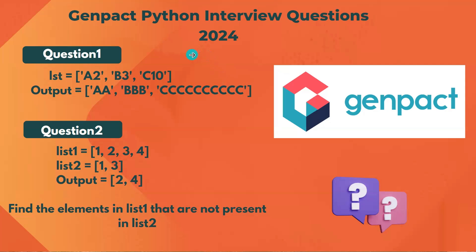Hello everyone, welcome back to the channel. In this video I will be covering Python interview questions that were recently asked in a GenPact interview. Talking about the first question: given a list we have 'a2', 'b3', 'c10'.